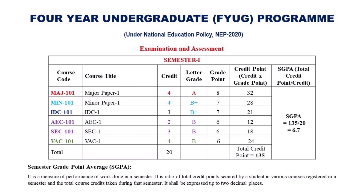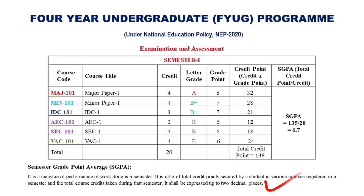Finally, the overall performance of the student in that semester is measured in terms of the Semester Grade Point Average, that is SGPA. SGPA is a measure of performance of work done in a semester. It is the ratio of total credit points secured by a student in various courses registered in a semester to the total course credits taken during that semester. It shall be expressed up to two decimal places.